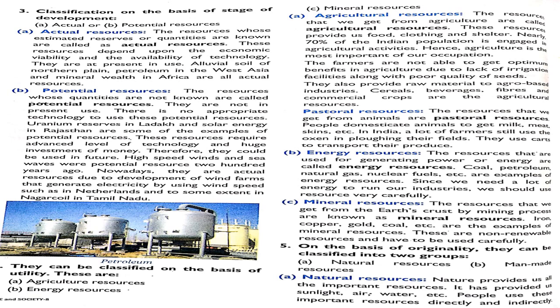The second type is potential resources — resources whose quantities are not known and which are not yet in technological use. For example, in Rajasthan there are examples of potential resources that require advanced technology and huge investment of money. High-speed winds and sea waves are examples. They can become actual resources in the future through the development of wind farms which produce electricity, as you can see on screen.